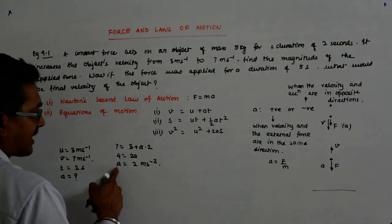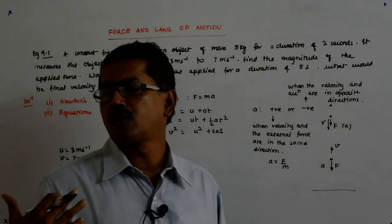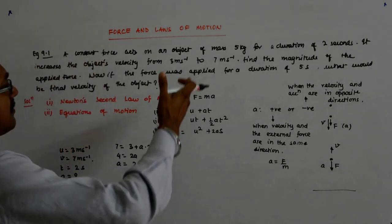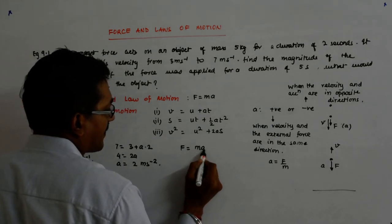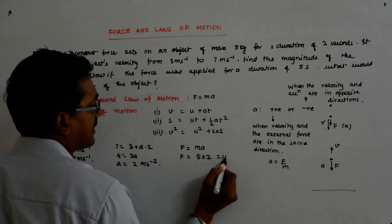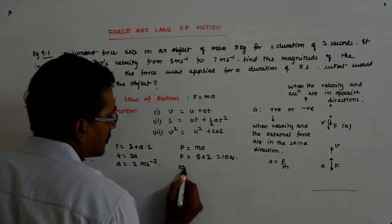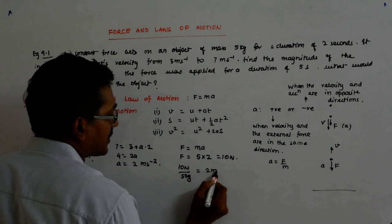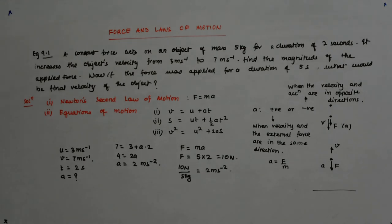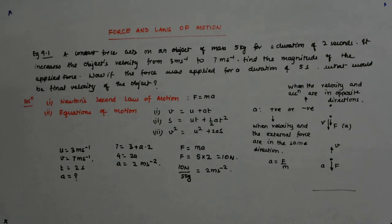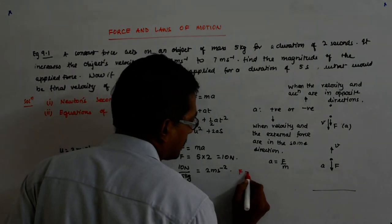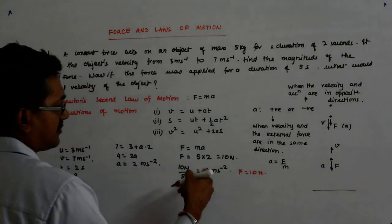Now that we know the acceleration, we can find the force. Which force causes an acceleration of 2 m/s² on a mass of 5 kg? That force is F = 5 × 2 = 10 Newton. A 10 Newton force divided by 5 kg gives 2 m/s². So F = 10 Newton.